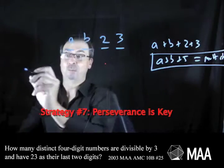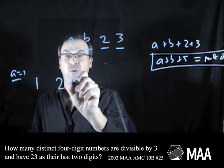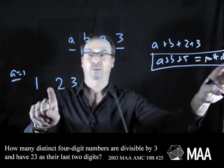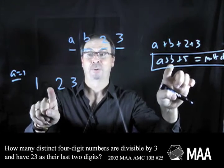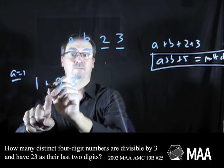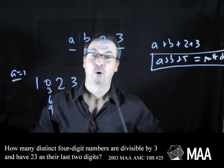For example, what if a is one? What would I get? One something, two, three. And I want this to add up to multiple of three. If a is one, I get one plus five here. It's already multiple of three. So I want b to be multiple of three. So I guess b could either be zero or three or six or nine. I guess there's four options right there.